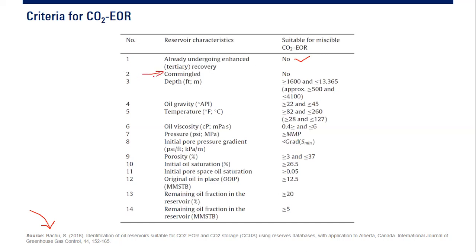The second criterion: not commingled. If you perform commingled production, it will be very difficult to characterize the performance — knowing which production comes from which reservoir. Most best practices and papers on reservoir management recommend against commingled production; single completion is preferred.